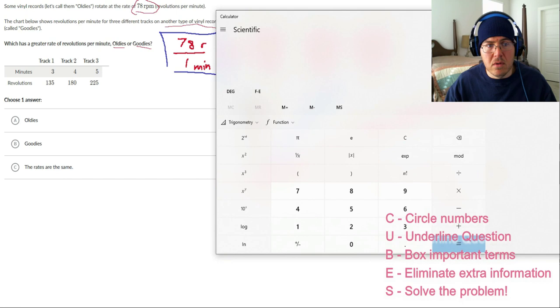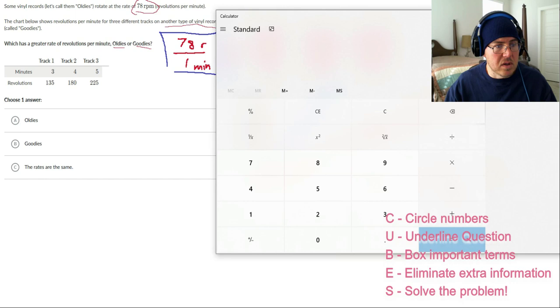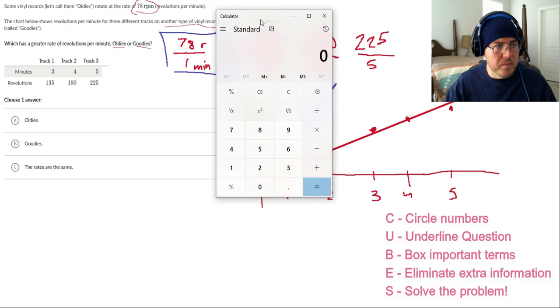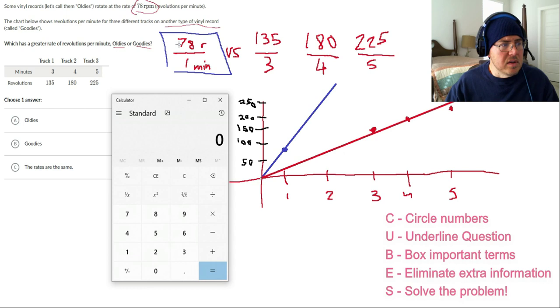I'm going to pull up that thing that we call calculator. We don't need to see the scientific theory. Why is it taking up so much of my screen? There we go. So, 78 divided by 1. Oh, shocker, it's 78. And I know you all were thinking, why is it even bothering? So let's see what these are. So let's see, 135 divided by 3 is 45.